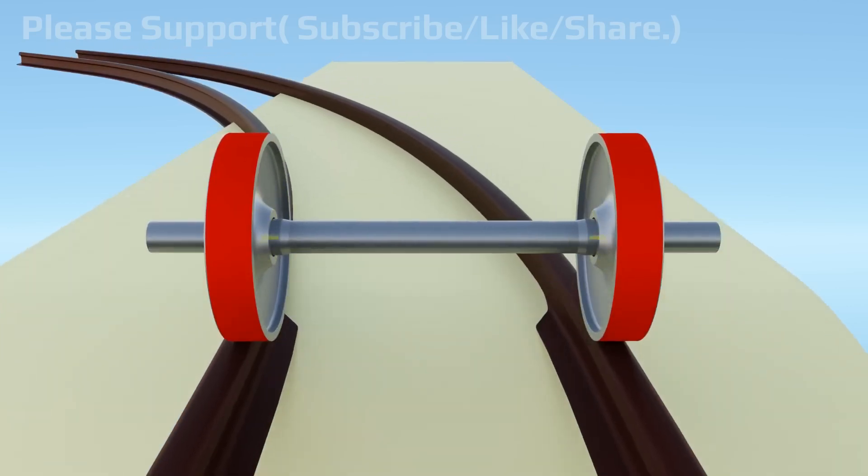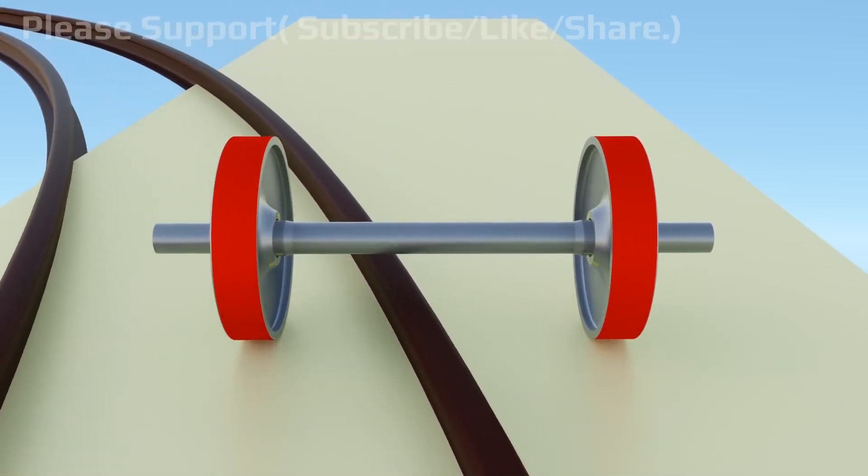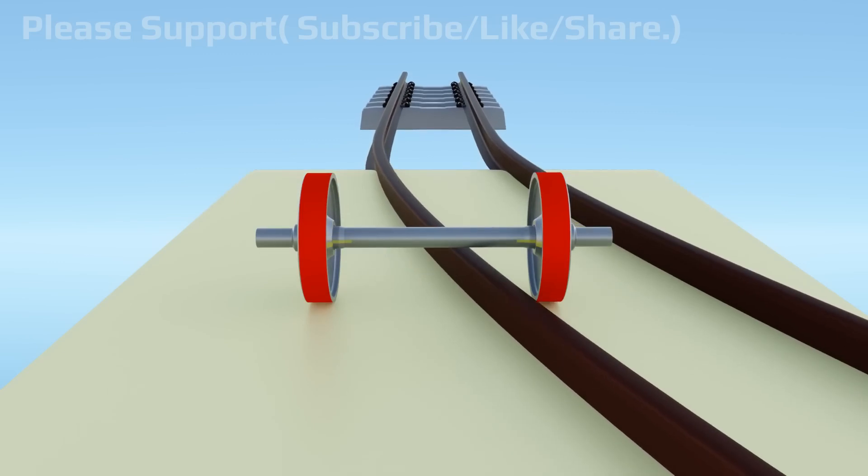the rail's curve section begins, there will be no steering force to turn the wheel set to follow the curved rail. This means a cylindrical shape cannot follow a curved rail track.